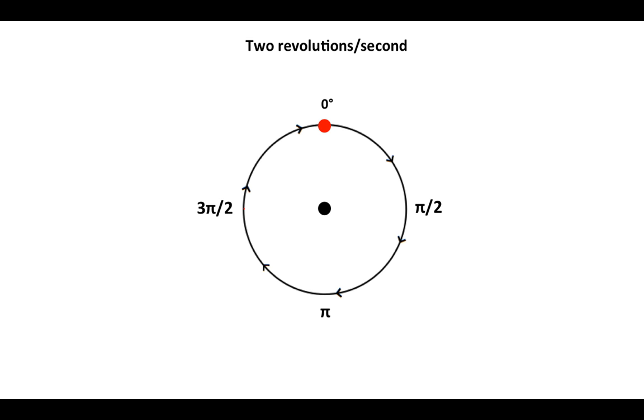Two revolutions per second would be 4π radians per second and would look like this. And after all the time it took me to work at this graphic, let's look at it one more time.